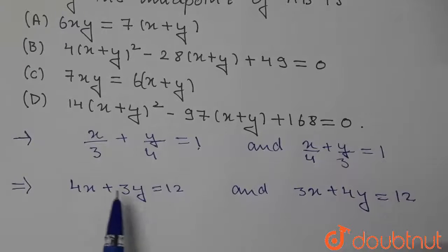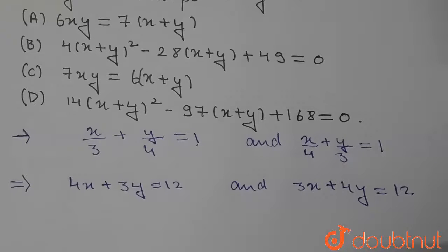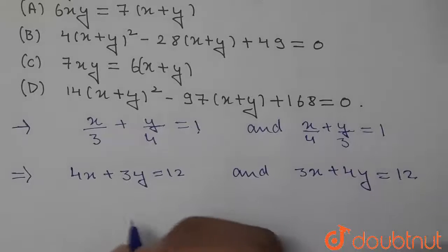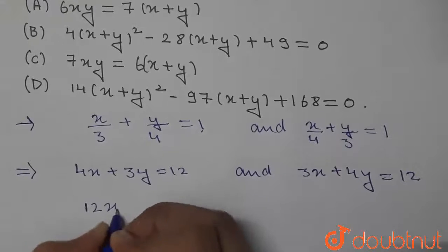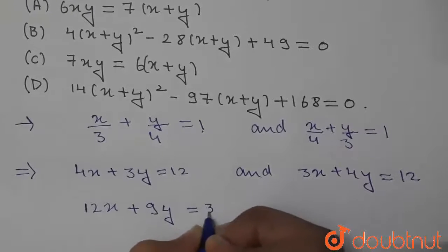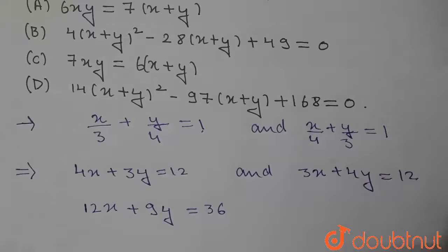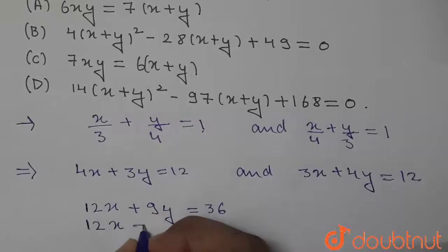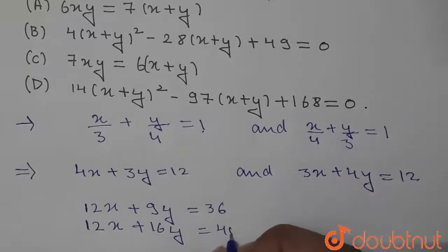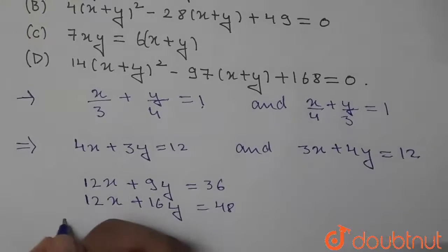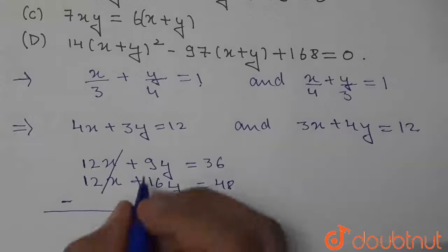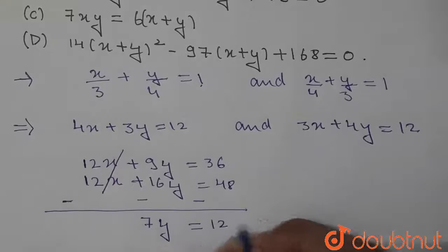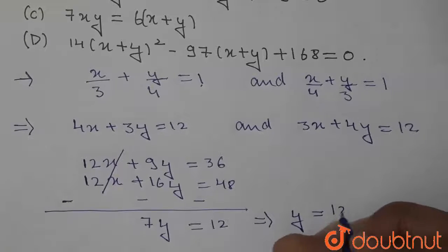The line passes through the intersection point of these two lines and cuts the coordinate axes at A and B. To find the intersection point, we multiply the first equation by 3 to get 12x + 9y = 36, and the second by 4 to get 12x + 16y = 48. Subtracting, the 12x terms cancel, giving 7y = 12, so y = 12/7.